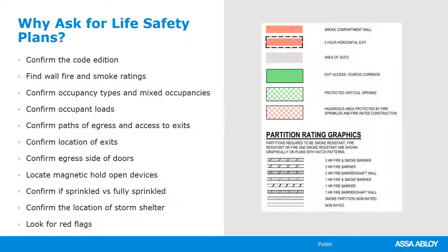Sometimes your door schedule doesn't have notes where the magnetic hold opens are listed, and the life safety plan will show them either with a symbol or just calling it out with a note. You can confirm if the building is sprinklered or fully sprinklered or not, and that makes a difference in your hardware selection. Depending on the area of the country, there may be a storm shelter or FEMA tornado shelter indicated on the life safety plans. Additionally, look for red flags, which will raise questions for the architect.